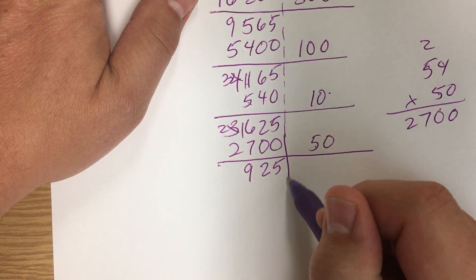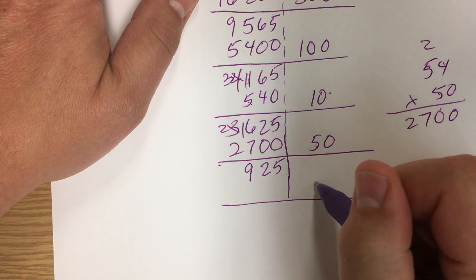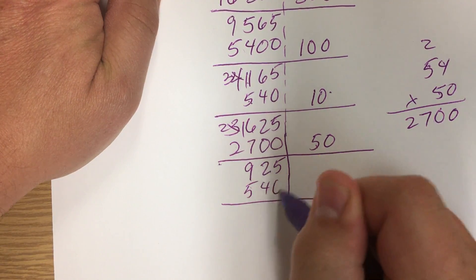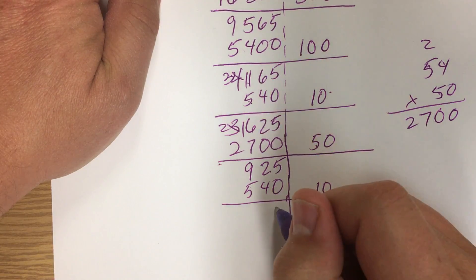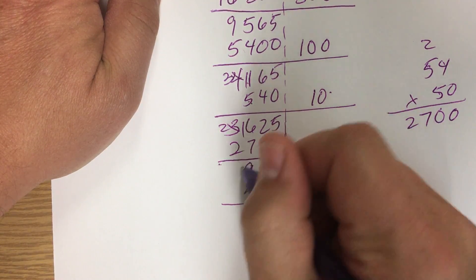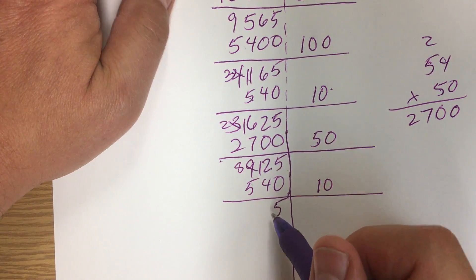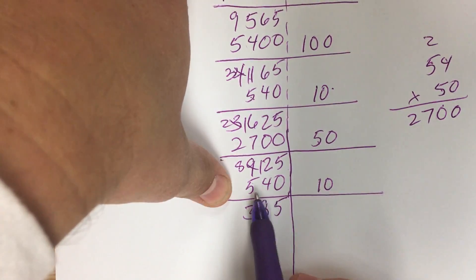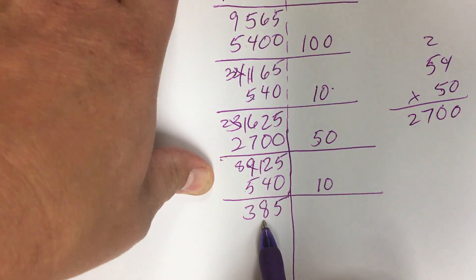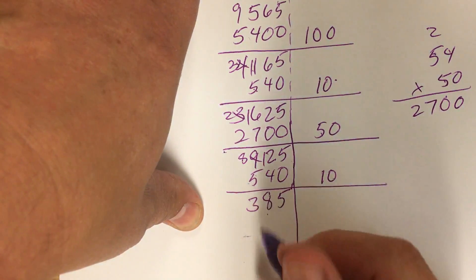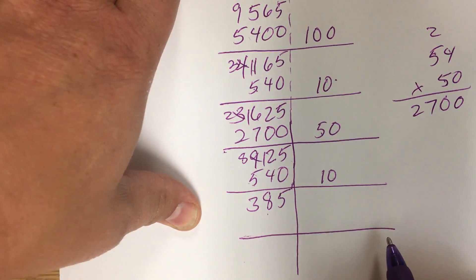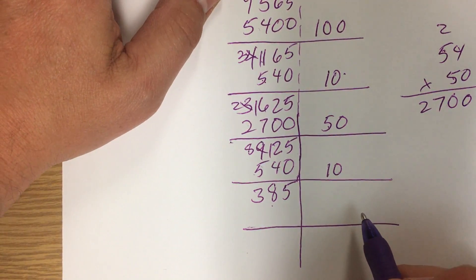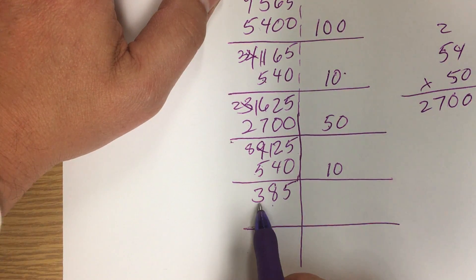I know I can take one more 540 out of 925. So I put another 10 and subtract 540. I have 385 left. I'm no longer able to use 10s because 540 is larger than what remains, so now I'm going down to the ones place — how many 54s can fit into 385?